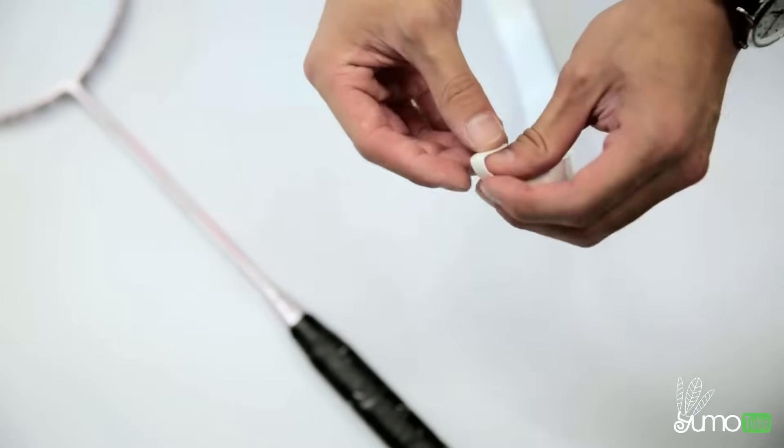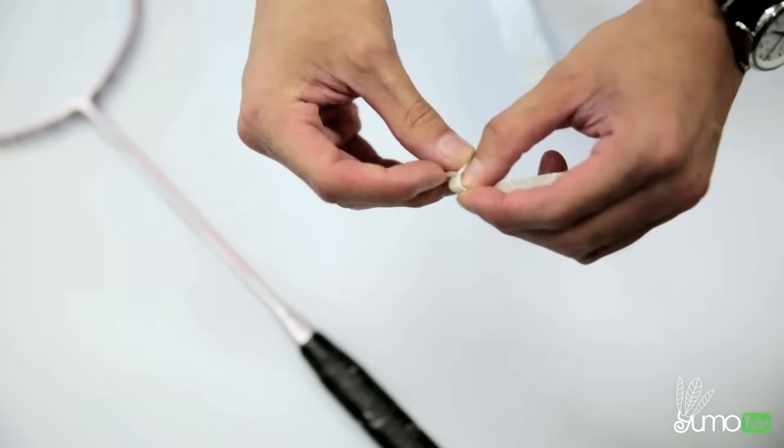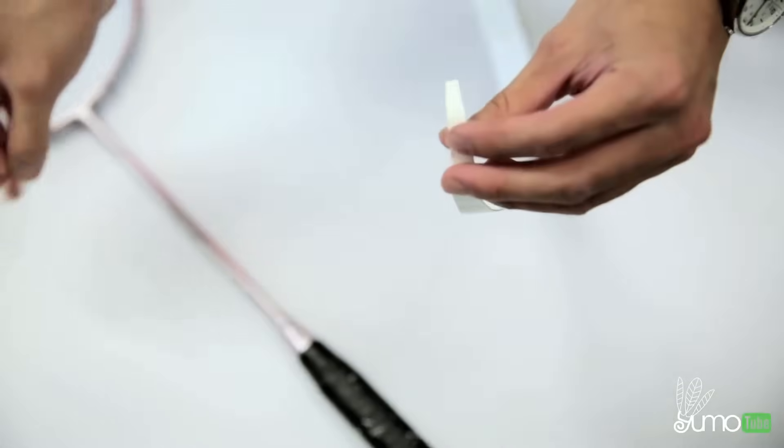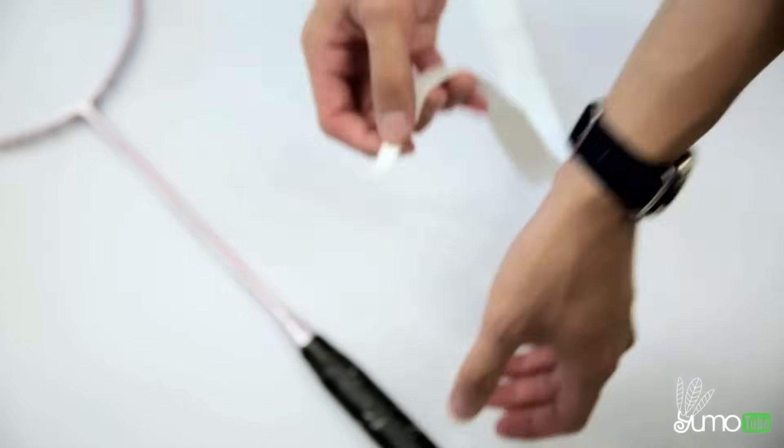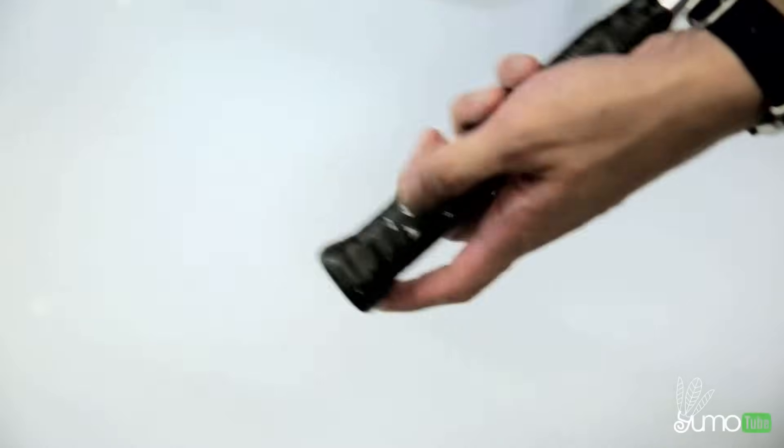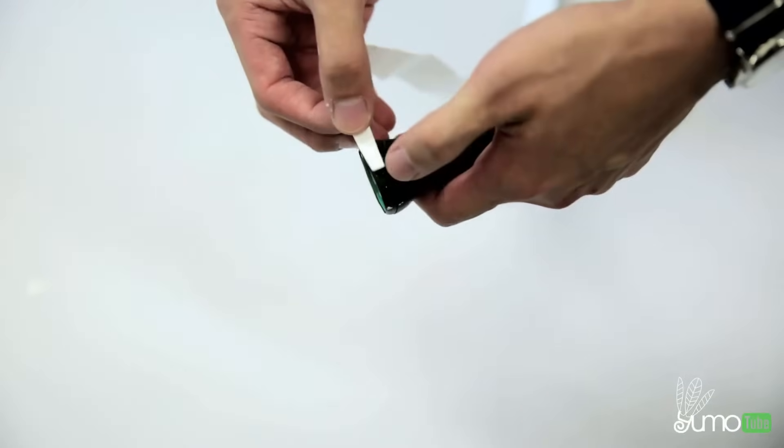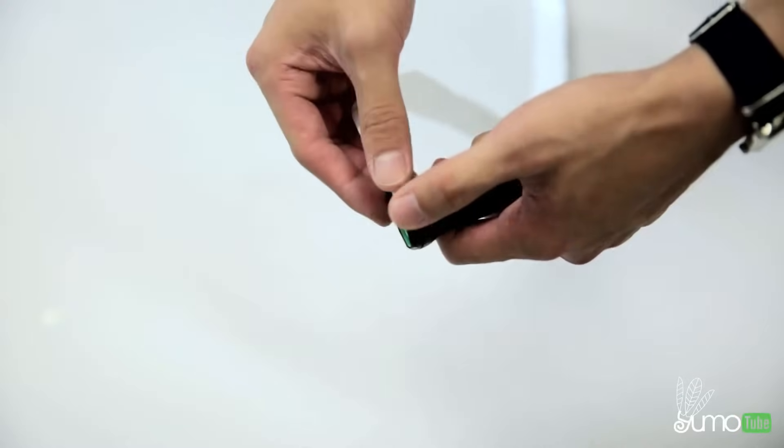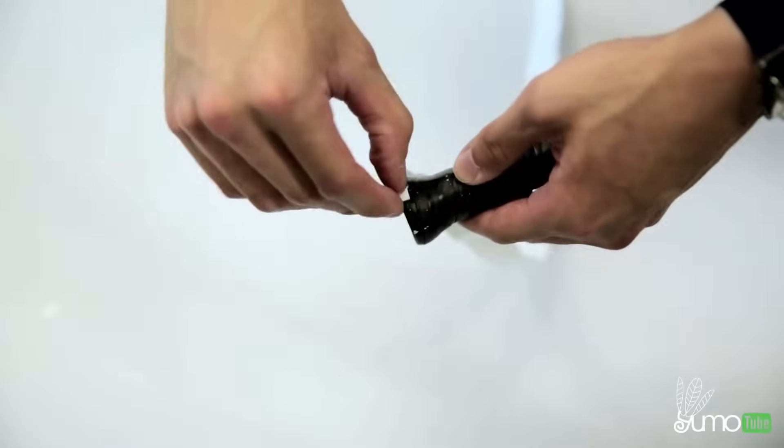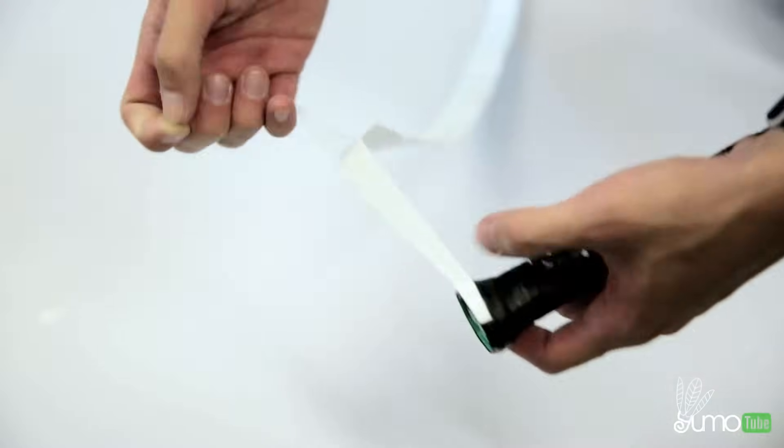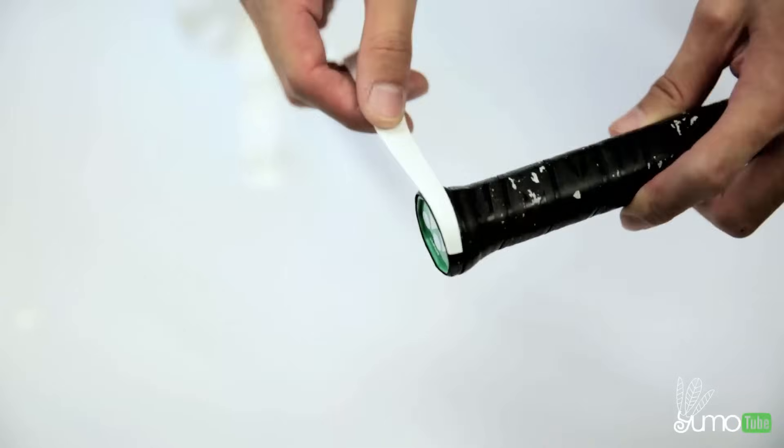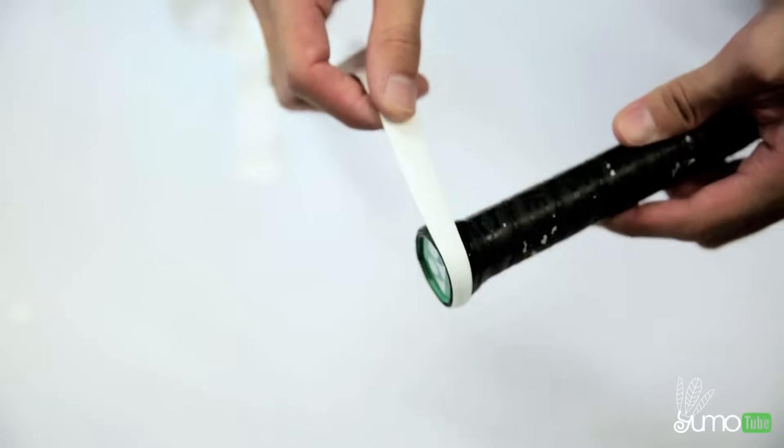So to begin, you want to take off this little sticker here so it shows the glue, and what you want to do is start at the bottom, place it at the edge, then you peel off the top plastic layer of the grip. Okay, once you do that then you can start gripping your racket.